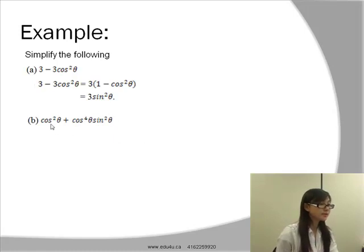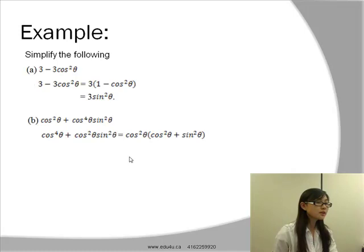Now let's take a look at another example: cos squared plus cos to the power 4 θ times sine squared. We can take out cos squared from both of the terms and we're left with cos squared times in bracket cos squared plus sine squared θ. We know the second term is equal to 1, so our final answer would be cos squared θ.